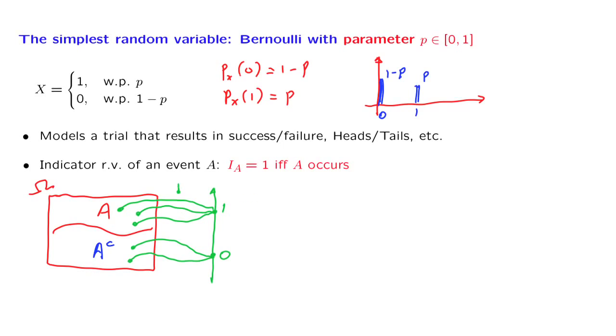This random variable is called the indicator random variable of the event A. It is equal to 1 if and only if event A occurs.